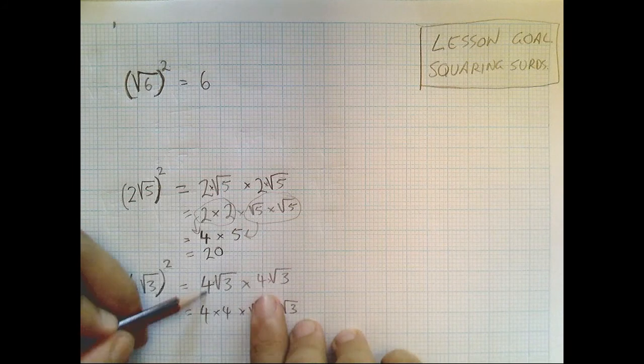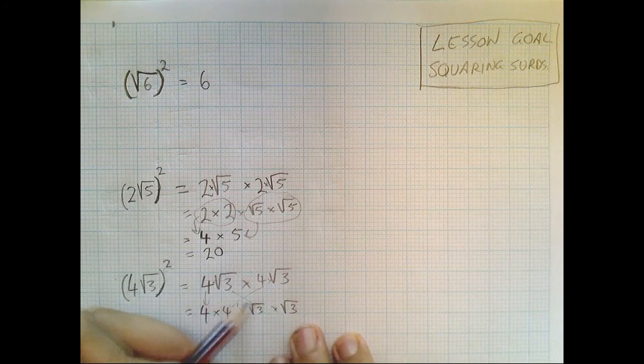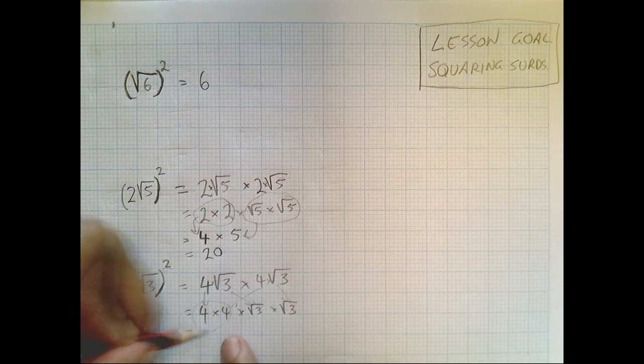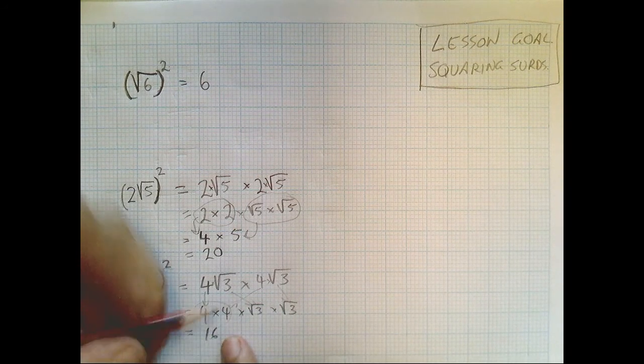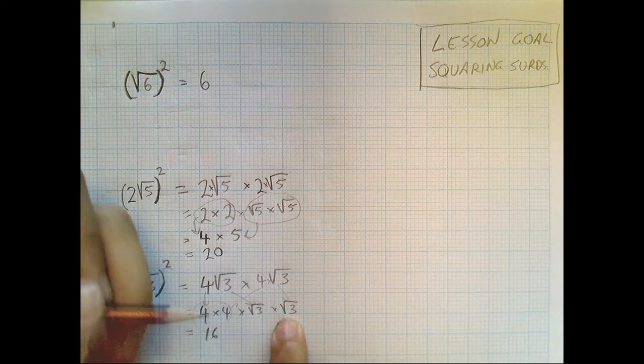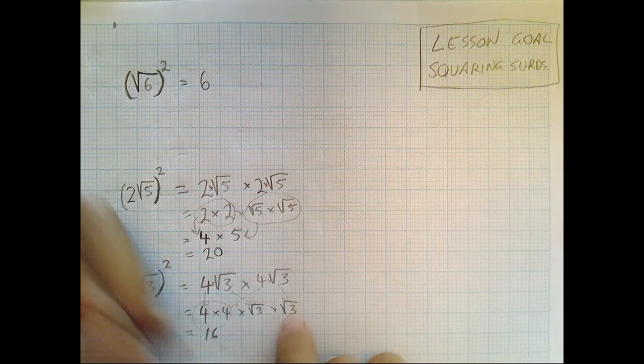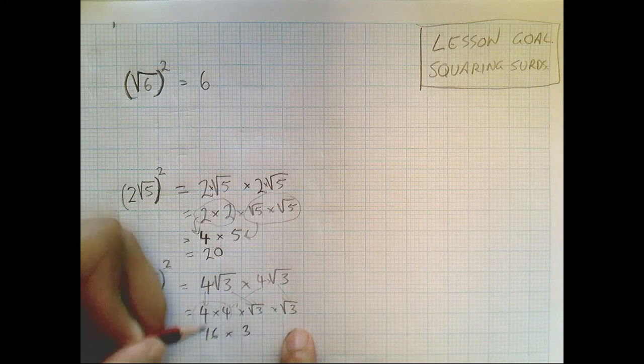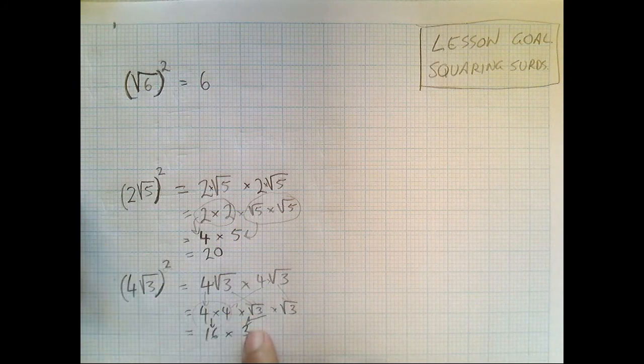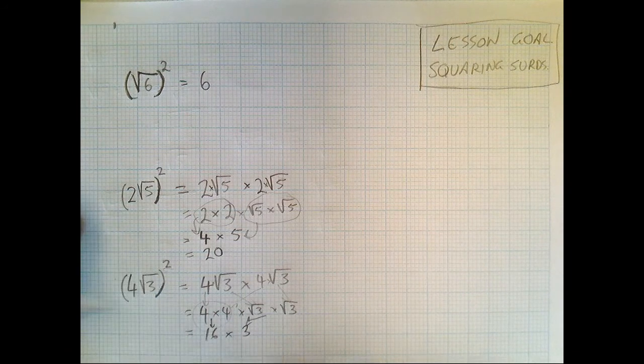Okay, so all the fours, they went there. The root threes went there. Now four times four is sixteen. Now root three times root three is the same as root three squared, which just gives us three. Okay, so that four times four was sixteen. Root three times root three just gives us three. Finally, sixteen times three.